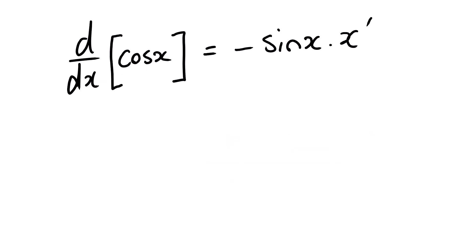The derivative of cos x is equal to negative sine x multiplied by the derivative of the angle.